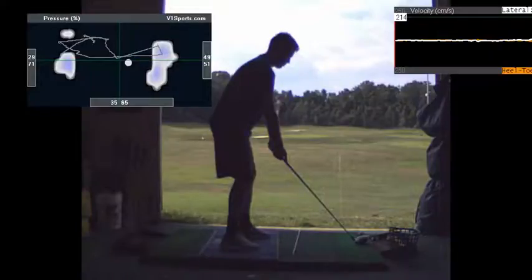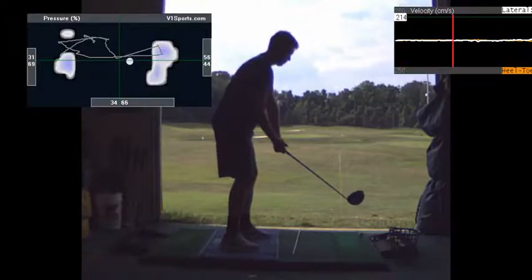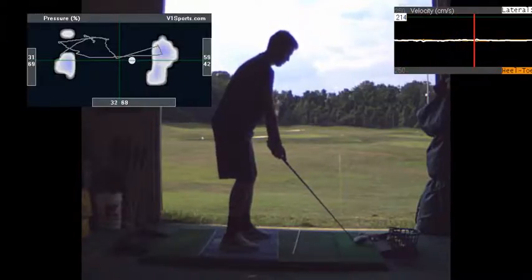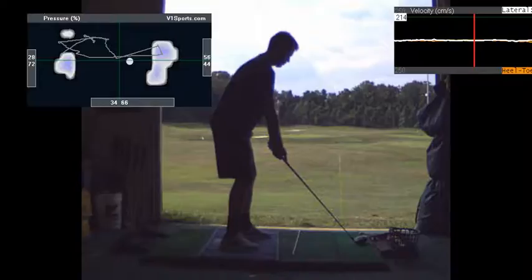Alright, well, this measures weight distribution heel-to-toe with the vertical bar, and then the horizontal bar measures right-to-left weight. So it looks like you've got about 60% of your weight on your right side at address, which is fine for a driver.